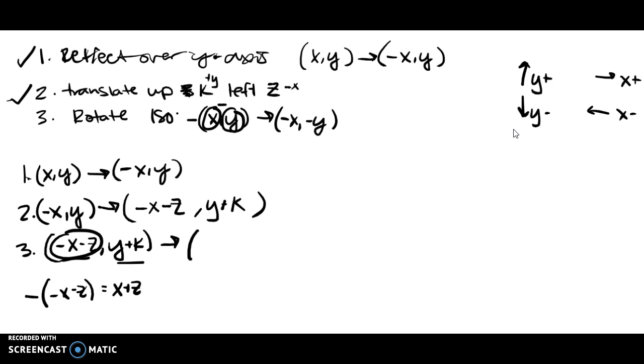So here we have X plus Z. And then if we were to take Y plus K and make the whole thing negative, right, because that's what's happening right here, then we get negative Y and minus K. Right? So the negatives are being distributed to both of these in each of these cases. So now we have negative Y minus K. This right here is your final answer.